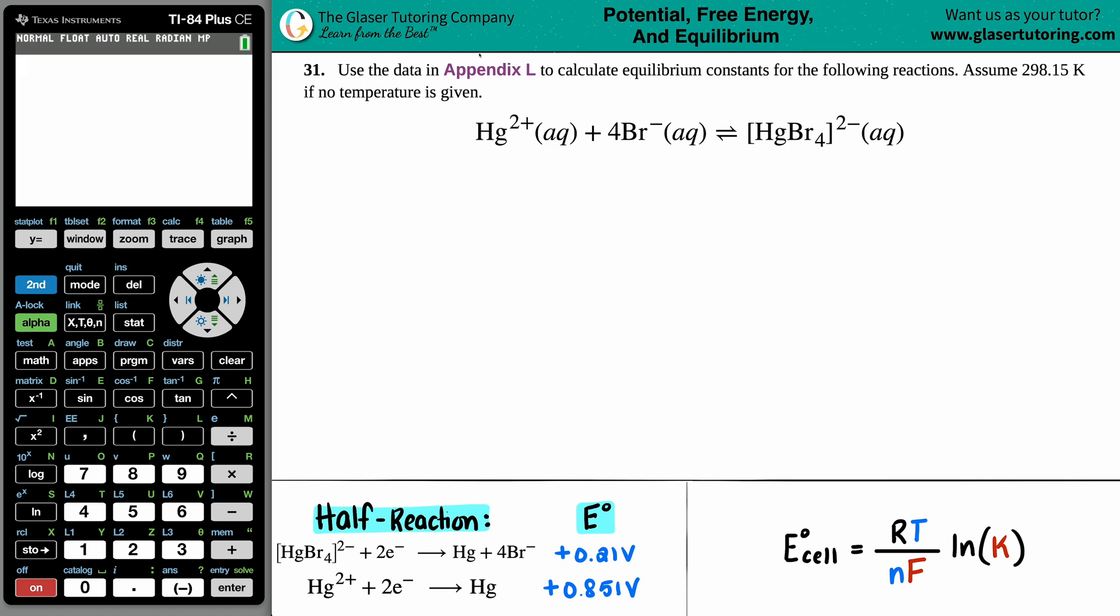Number 31, use the data in Appendix L to calculate equilibrium constants for the following reactions. Assume 298.15 Kelvin if no temperature is given, and then we just have to find the equilibrium constant for this equation.